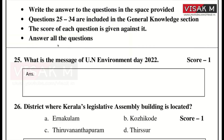Here are the instructions for you. Write the answer to the questions in the space provided. The questions are starting from 25 to 34, which are included in the general knowledge section. The score of each question is given against it, and you have to answer all the questions.